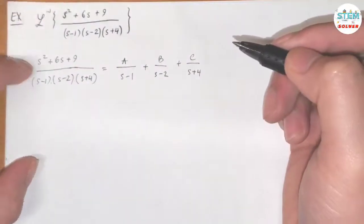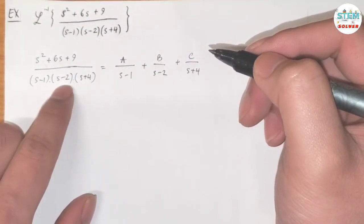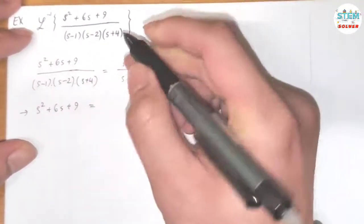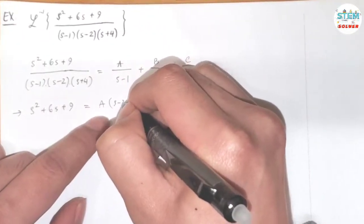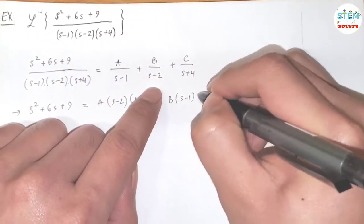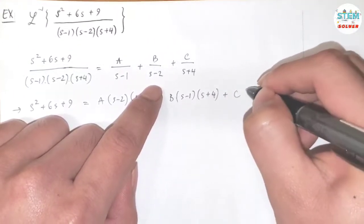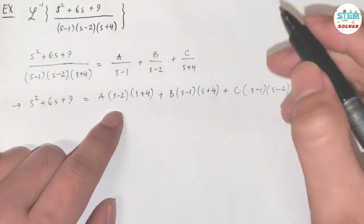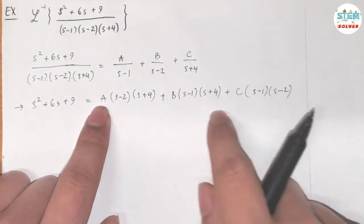I'm going to multiply both sides by (x minus 1) times (x minus 2) times (x plus 4). Then on the left side, I have x² plus 6x plus 9 equals A times (x minus 2) times (x plus 4) plus B times (x minus 1) times (x plus 4) plus C times (x minus 1) times (x minus 2). Now we have to find A, B, and C.